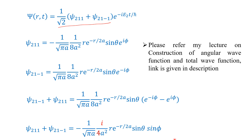For Ψ(r,t) we have to multiply by e^(−iE_n t/ℏ). The wave function ψ₂₁₁ is equal to minus 1 over square root of π times a, times 1 over 8a² times r, times e^(−r/2a), times sin(θ) times e^(iφ).